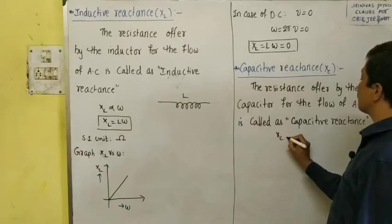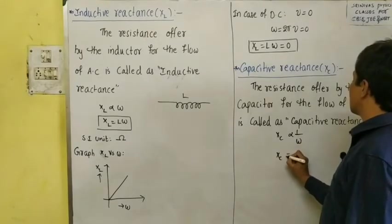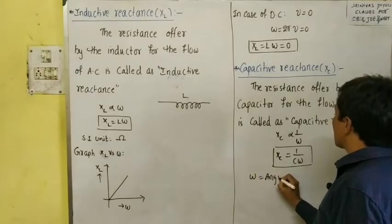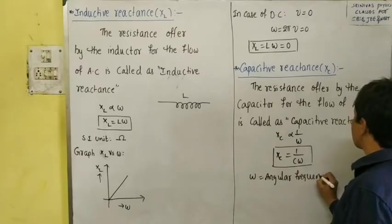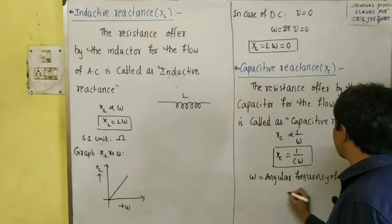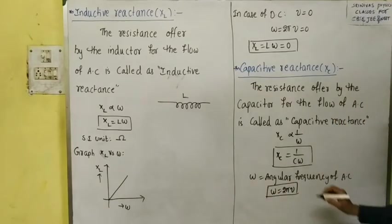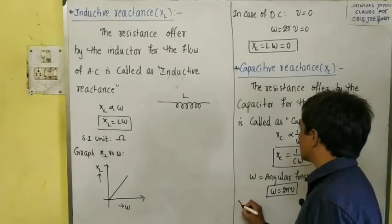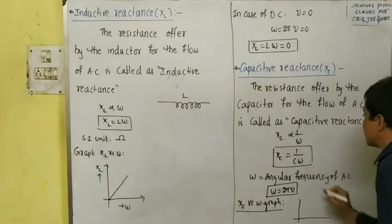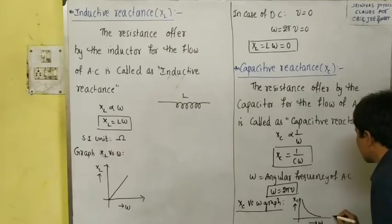Capacitive reactance is inversely proportional to omega. Its formula is XC = 1/(Cω), where omega is the angular frequency of AC. The omega formula is ω = 2πν. If we draw the graph between XC and omega — that is XC versus omega — because when omega increases, XC decreases, we will get a hyperbolic curve like this.